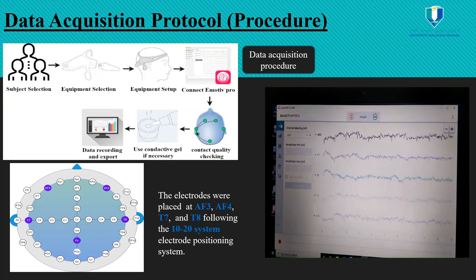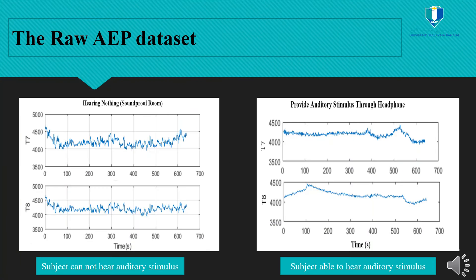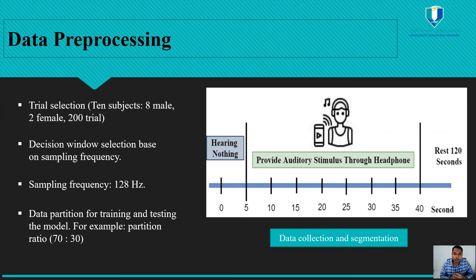In this study, the electrodes were placed at F3, F4, T7, and T8, following the International 10-20 system. The first figure shows the raw data plot when the subject cannot hear the auditory stimulus, and the second figure shows the raw data plot when the subject is able to hear the auditory stimulus. From each subject, we collect multiple trials.